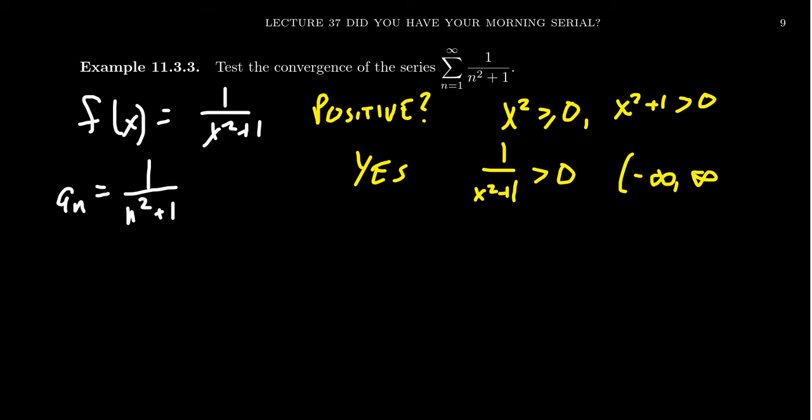It's going to be positive for all real numbers negative infinity to infinity. Now for the case of the integral test we only need this to be true for 1 to infinity. So in particular since it's positive everywhere it's going to be positive on the interval 1 to infinity. That's the first one, great.